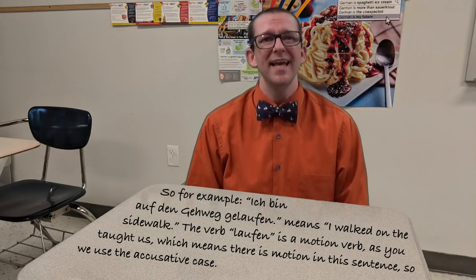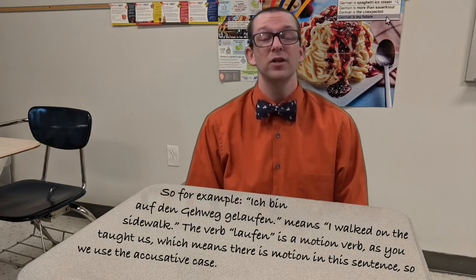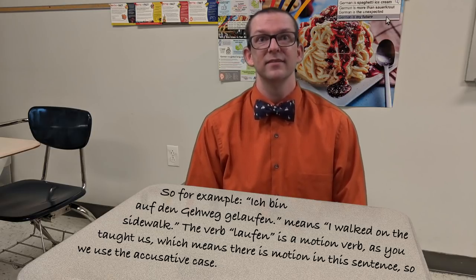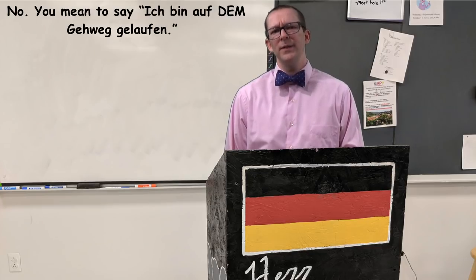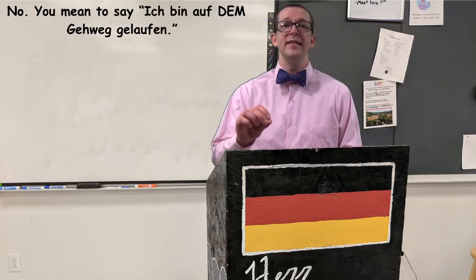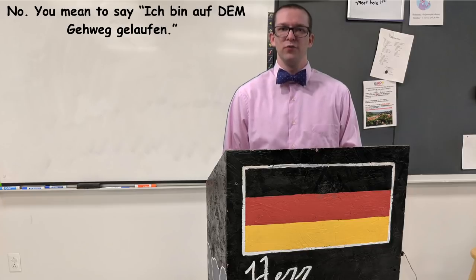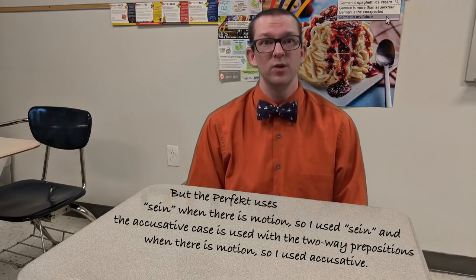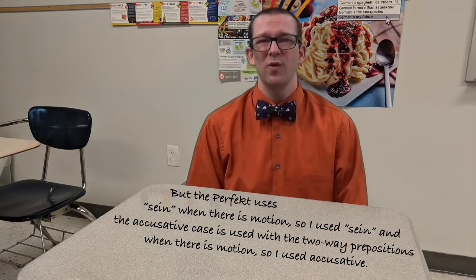So for example, 'ich bin auf den Gehweg gelaufen' means I walked on the sidewalk. The verb laufen is a motion verb, which means there is motion in the sentence, so we use the accusative case, right Herr Lehrer? No, you mean to say 'ich bin auf dem Gehweg gelaufen.' But the perfect uses sein when there is motion, so I use sein, and the accusative case is used with two-way prepositions when there is motion, so I used accusative.